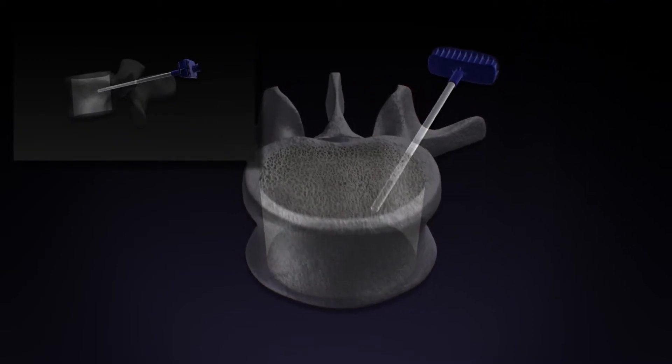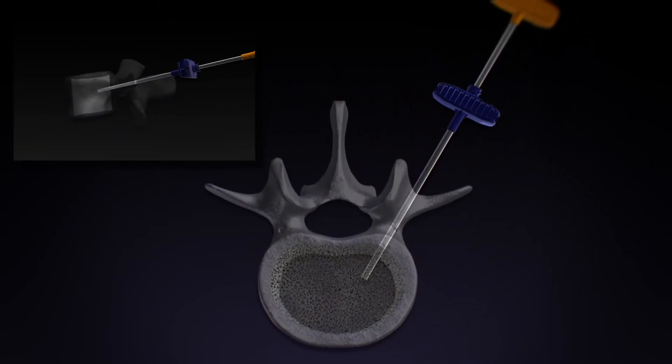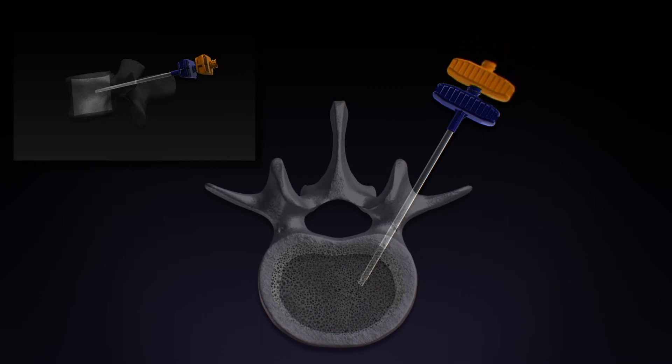The straight line osteotome is then inserted through the introducer into the anterior one-third of the vertebral body to create an initial cavity.